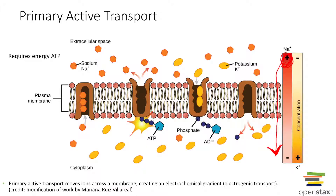The primary example for active transport is the sodium-potassium pump. This pump is going to attach three sodiums from inside the cell. ATP attaches onto the protein, and using the energy from ATP converting to ADP — when it breaks off that phosphate group — that energy powers this pump.